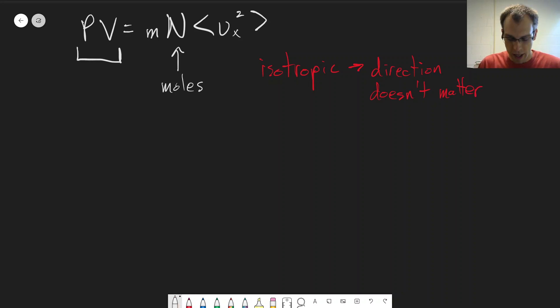So we could say that the average velocity in the x-direction squared will be the same in the y-direction and in the z-direction. So these are all going to be equal to each other because none of them are special.